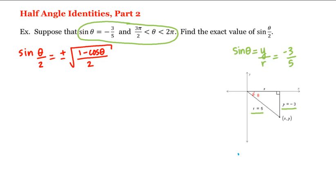Remember that cosine of theta is equal to x divided by r. So if we can find x, we'll be able to determine what cosine of theta is, which we can then use in the half-angle formula to determine sine of theta over two.